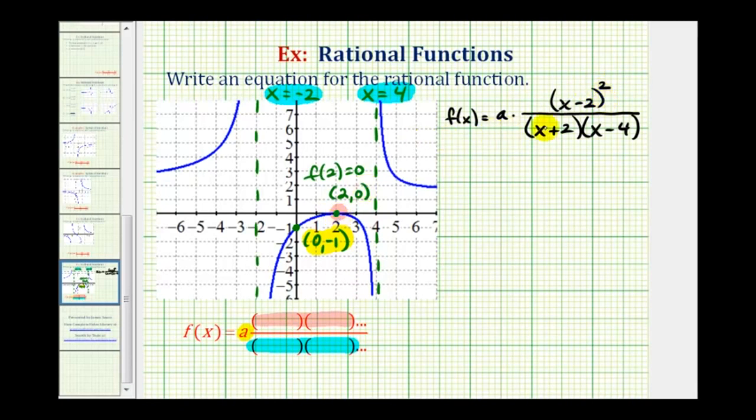And now the last step is to find the value of a. We can find the value of a using our y-intercept here. Again, if the function contains the point (0,-1), then f(0) equals negative 1. So now we'll find this function value, set it equal to negative 1, and then solve for a.